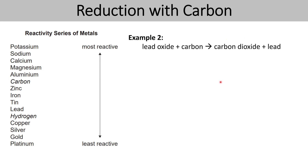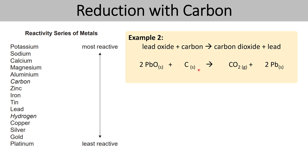Now let's have a look at another example. If you were to take lead oxide and react it with carbon, carbon is more reactive than lead, so carbon is able to displace lead from its oxide. Therefore this reaction will produce carbon dioxide — where the carbon is now bonded to the oxygen that originally belonged to lead — and lead has been displaced. Here's the symbol equation for this process, balancing to form CO2 and lead. We can explain it because carbon is more reactive than lead, so it's able to displace it.